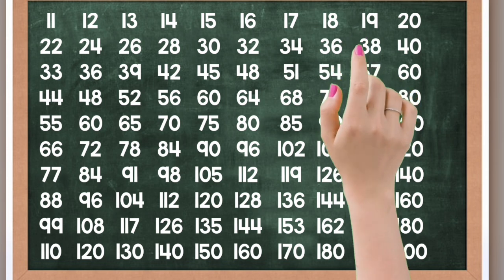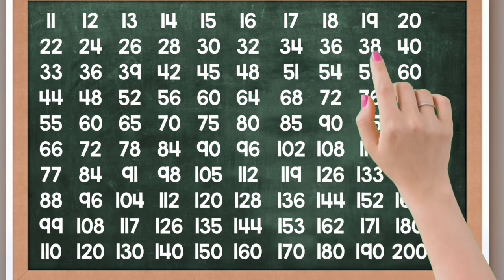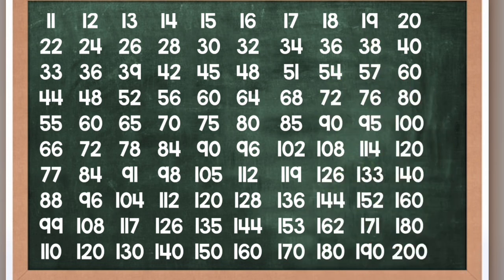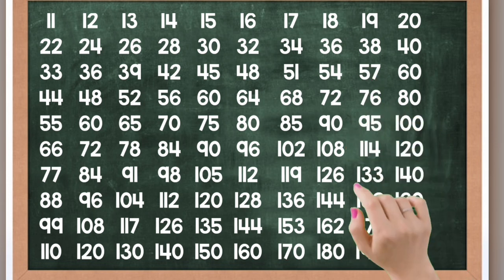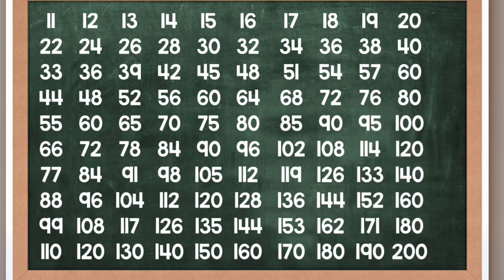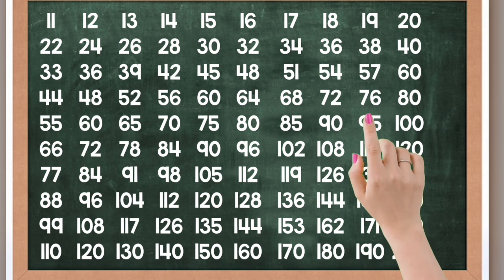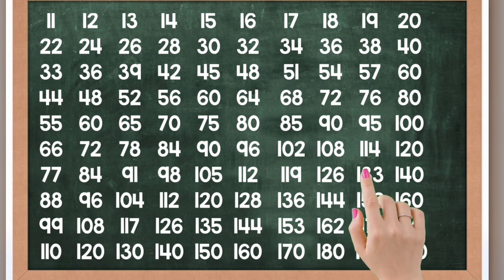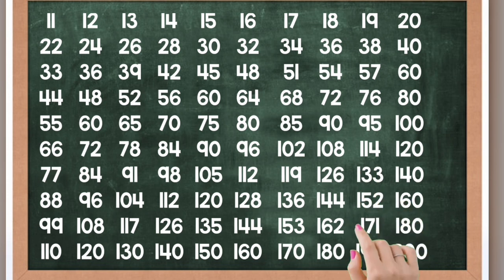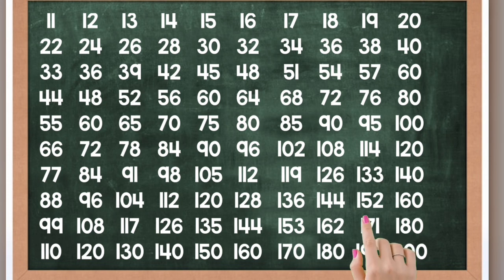19 times 1 is 19, 19 times 2 is 38, 19 times 3 is 57, 19 times 4 is 76, 19 times 5 is 95, 19 times 6 is 114, 19 times 7 is 133, 19 times 8 is 152, 19 times 9 is 171, 19 times 10 is 190.